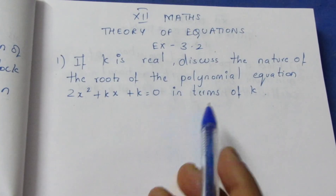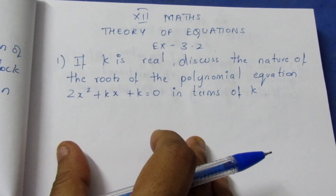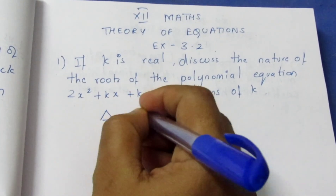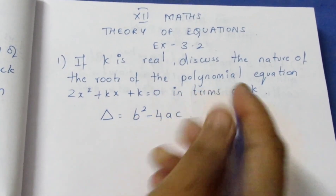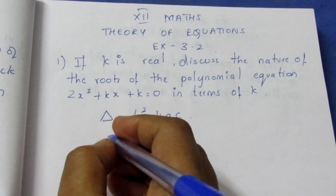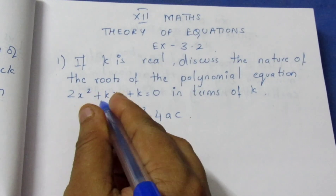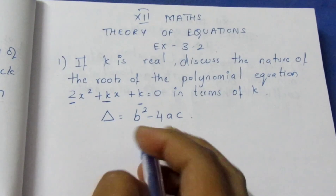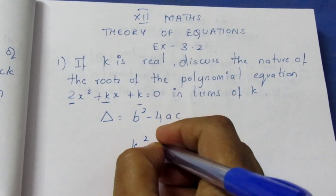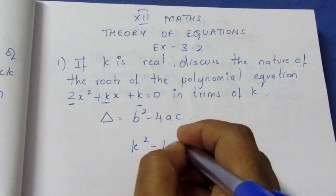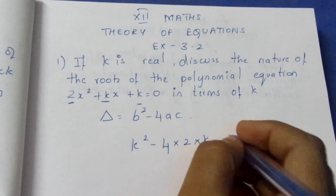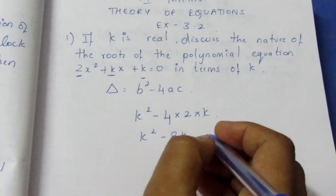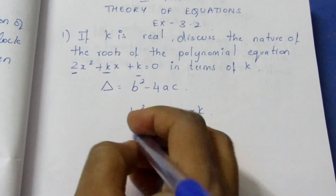To find what value of k gives real and equal roots, we use the discriminant formula: discriminant equals b² minus 4ac. Here b is k, a is 2, and c is k, so we get k² minus 4 times 2 times k, which gives k² minus 8k.